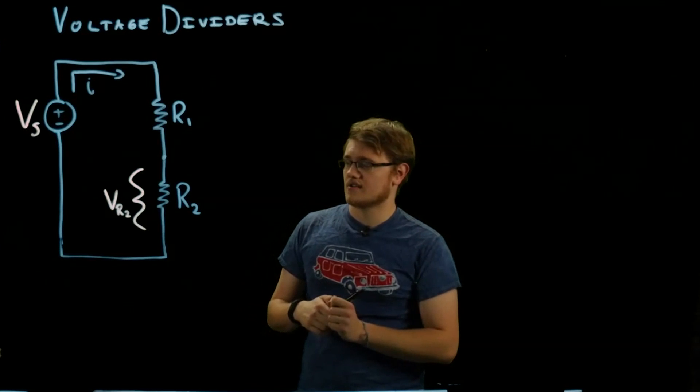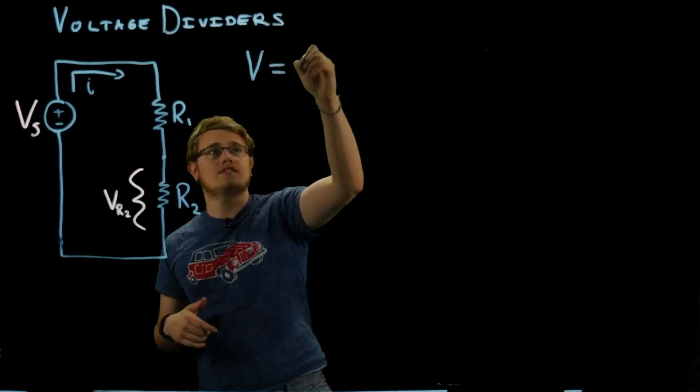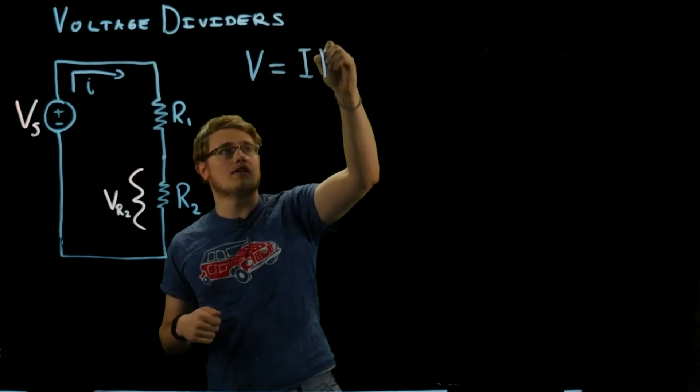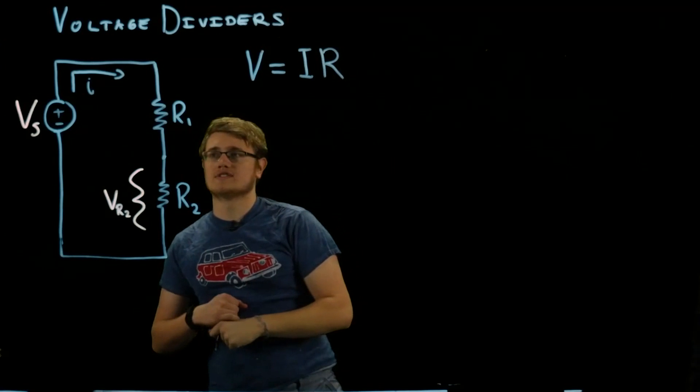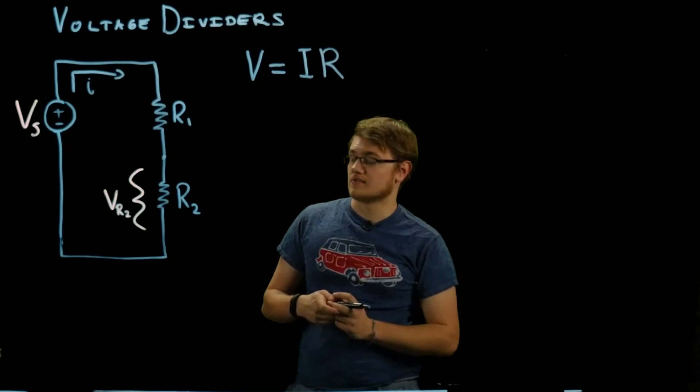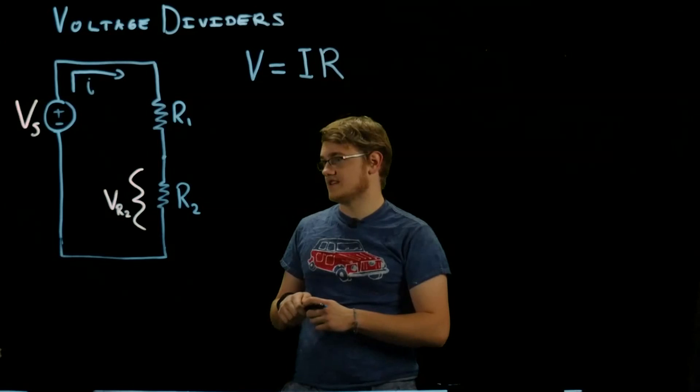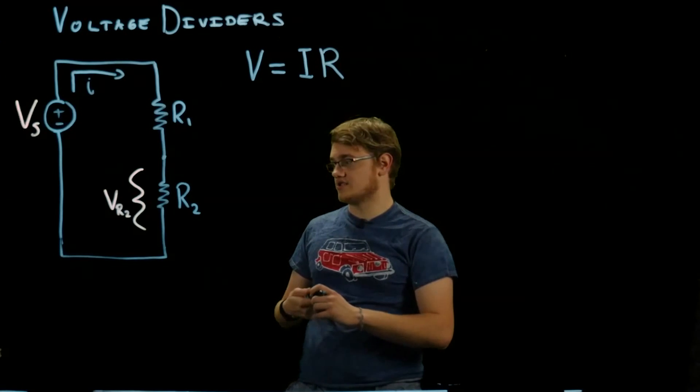Let's start by using Ohm's law. We've got V equals IR. We're going to derive the voltage divider formula. What do we want to find? We want to find VR2.